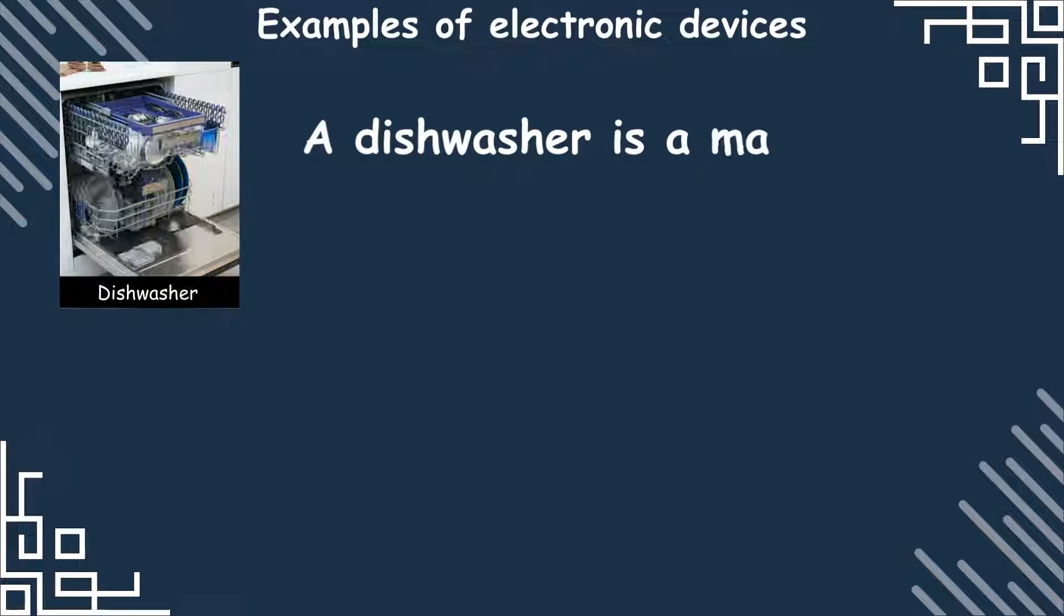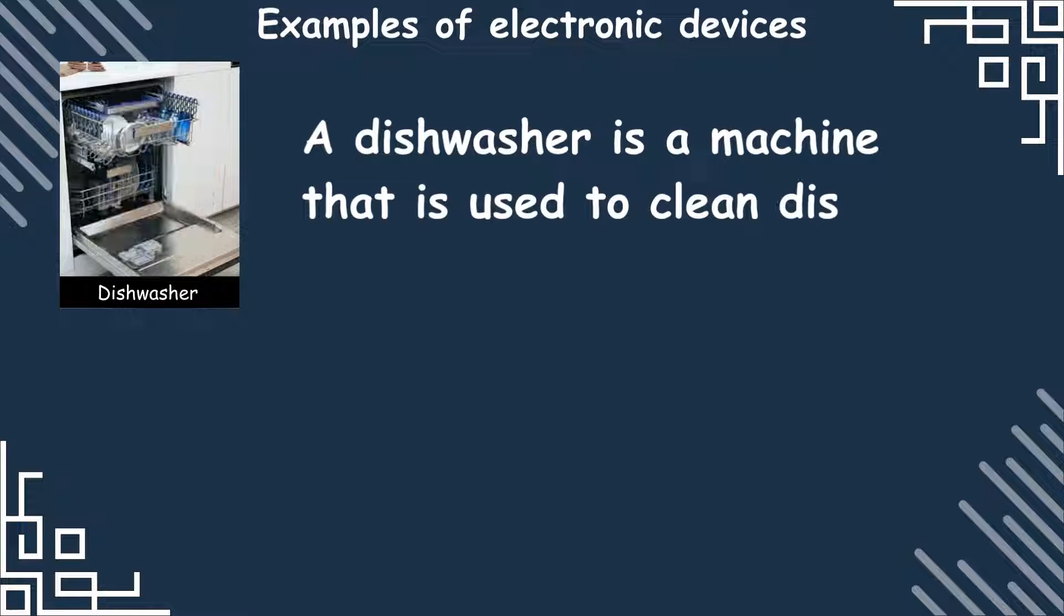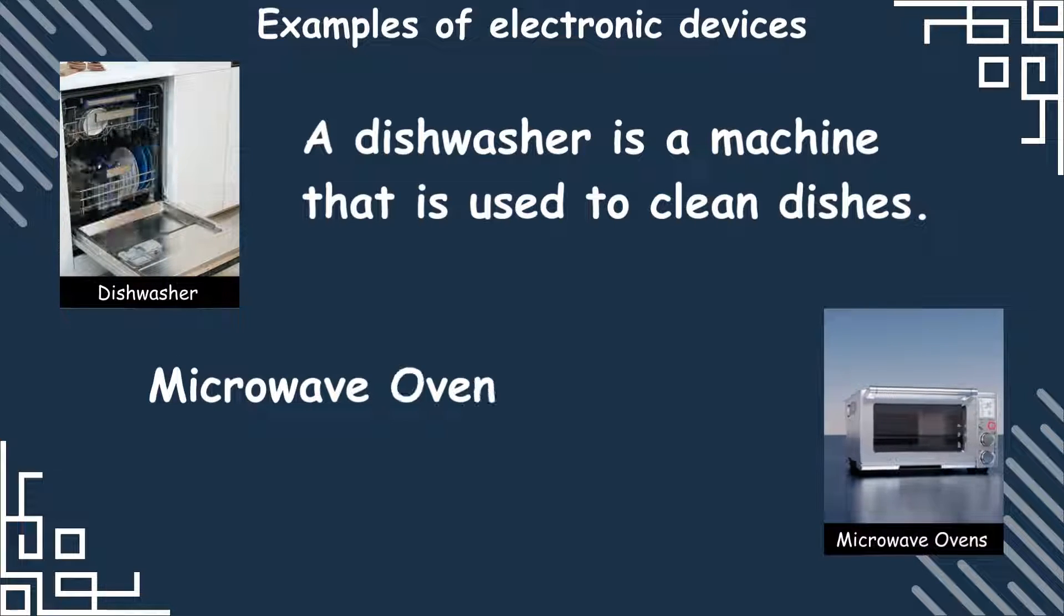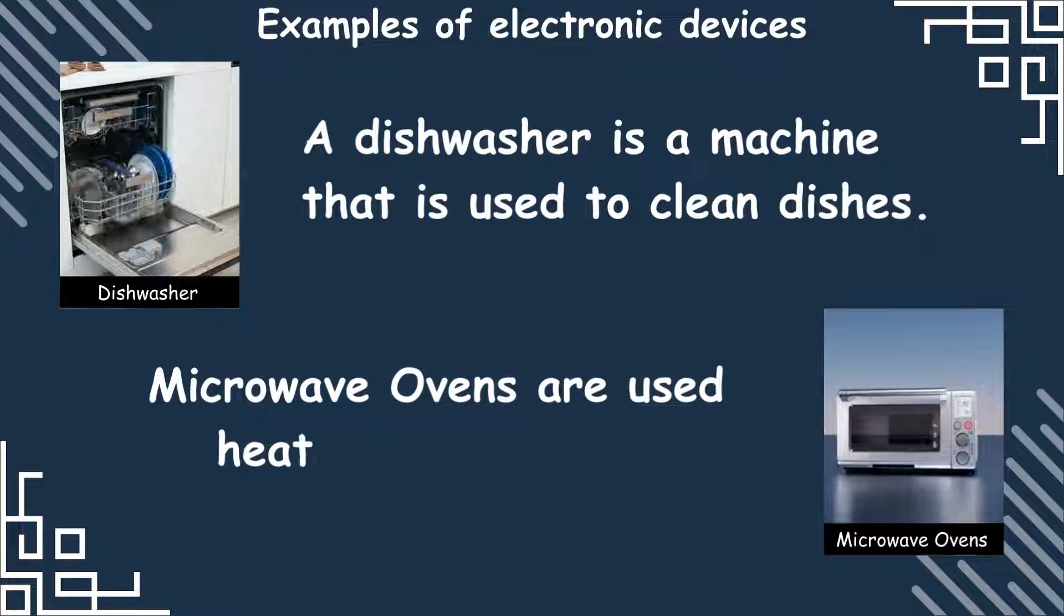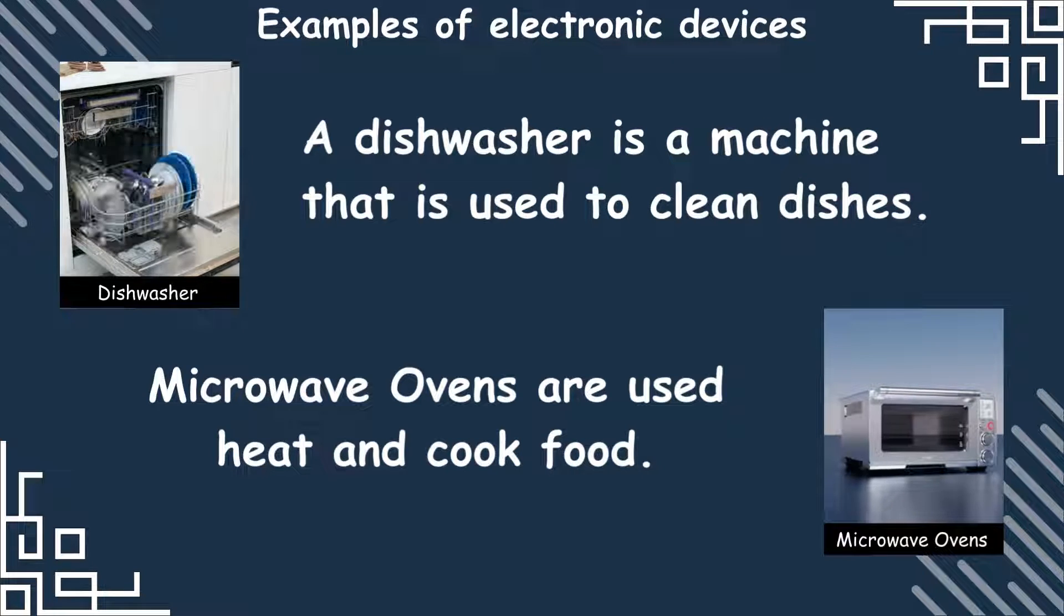Dishwasher: A dishwasher is a machine used to clean dishes. Microwave oven: Microwave ovens are used to heat and cook food.